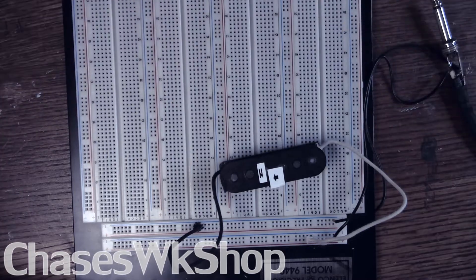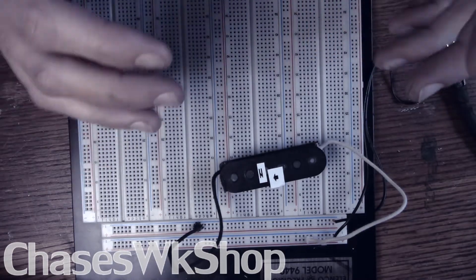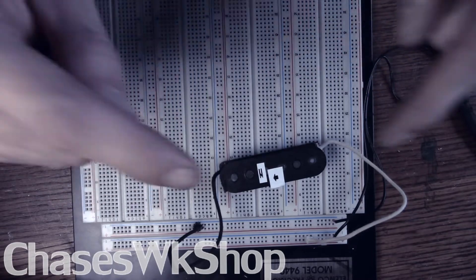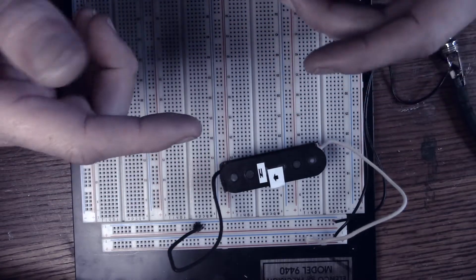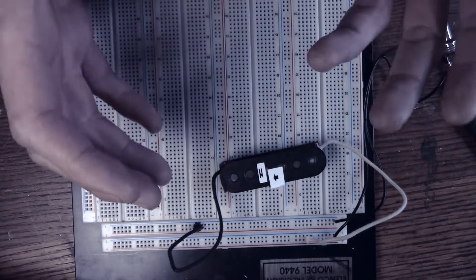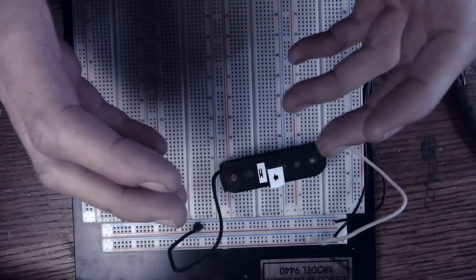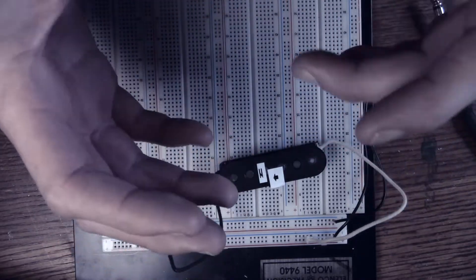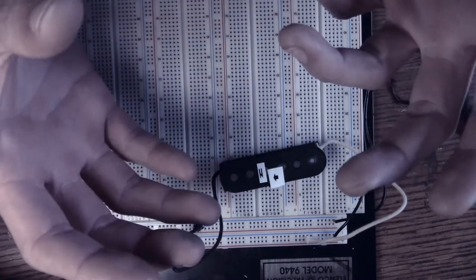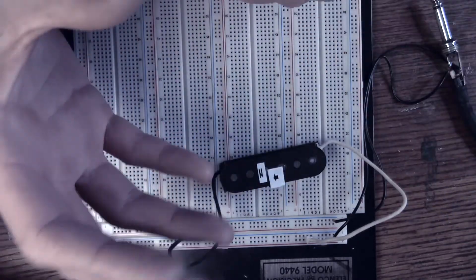Alright guys, what I want to talk about in this video is the different humbucker wiring configurations in comparison to a single coil. The thing we're focusing on here is not the sound it makes with the guitar, but outside electromagnetic frequencies that are coming from other sources in the house and things like that.